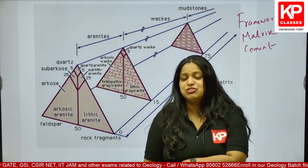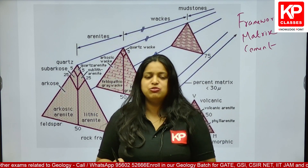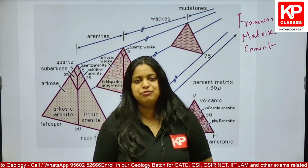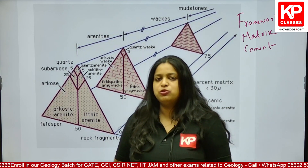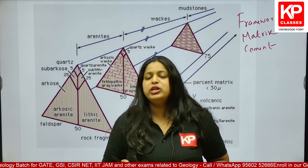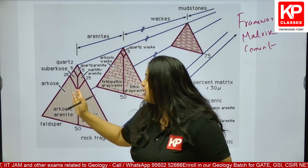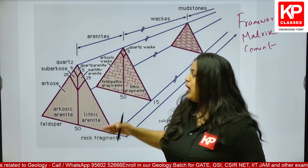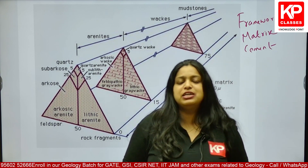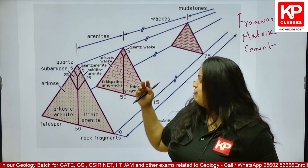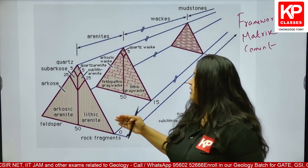Arenites are sandstones with matrix content less than 15%; wackes have matrix content more than 15%. Coming to the framework grains — whether mainly composed of quartz, feldspar, or rock fragment — we divide the arenite into further terms: quartz arenite, sublithic arenite, subarchos, archos, lithic arenite, etc. Arenite is further divided based on framework grain composition.